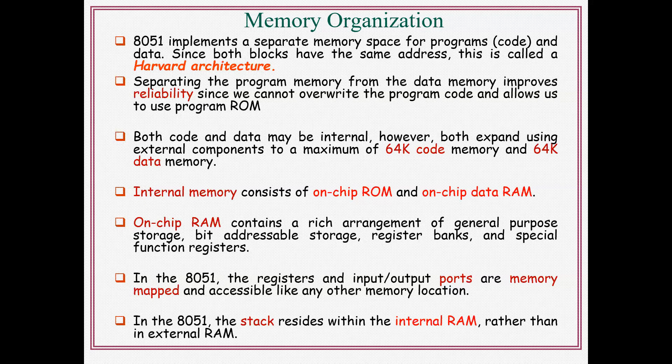Each lower 128 bytes are divided into three portions. The first portion is called the register bank. It supports four register banks, and each register bank contains eight registers, so 4 × 8 = 32 registers are available in total.